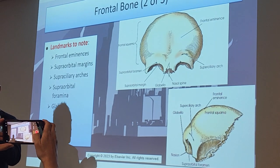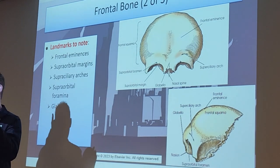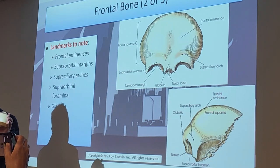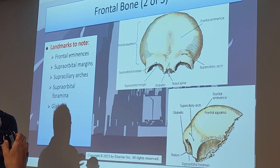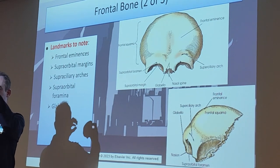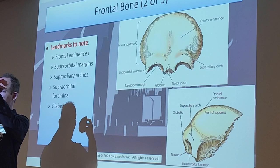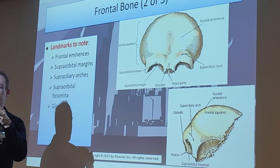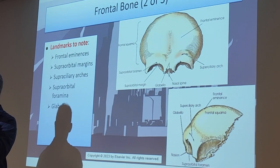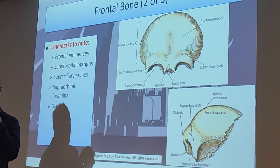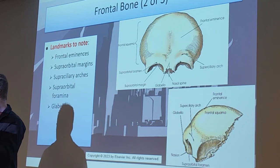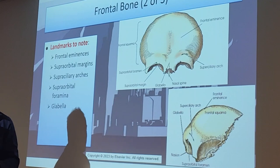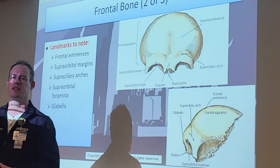The frontal eminence is basically this broad part on your skull where you'd headbutt somebody. It's called eminence because if you look at it from the side, it actually slightly protrudes outward. Some people have very prominent frontal eminences; others have very flat ones - you'll notice different people have big foreheads or flat foreheads.